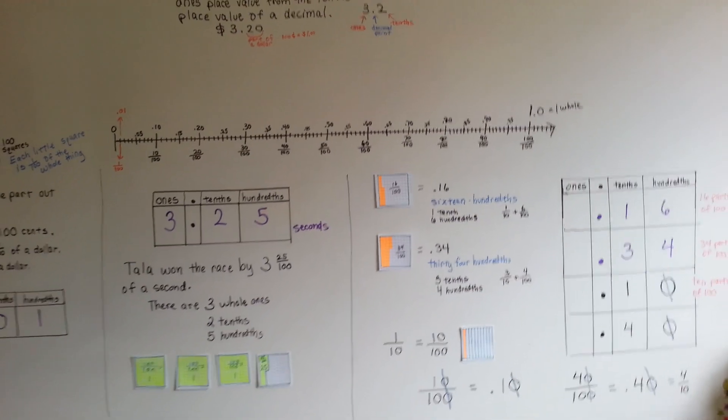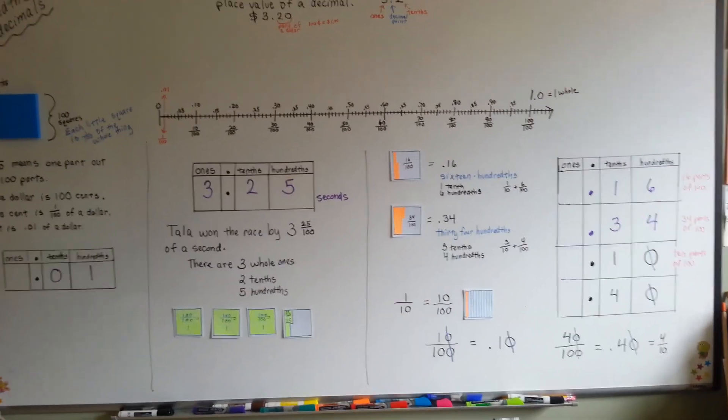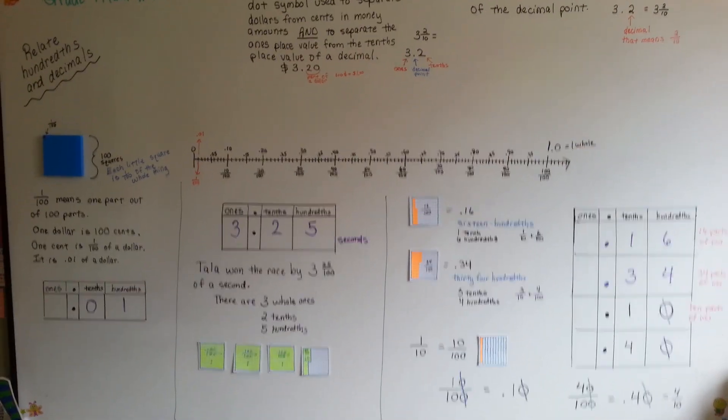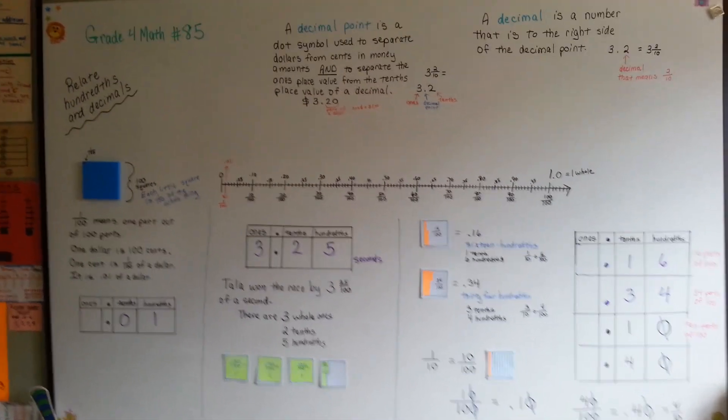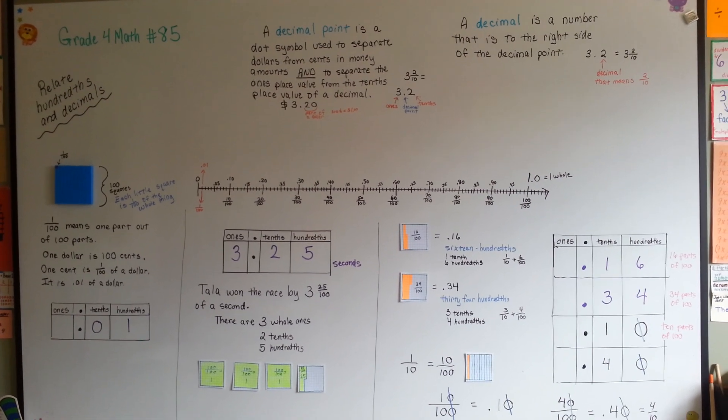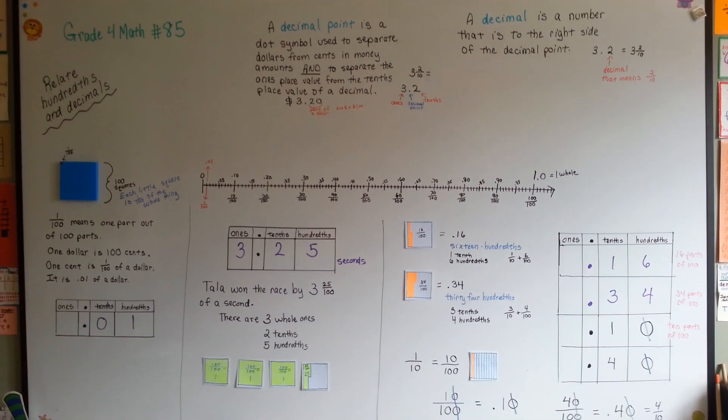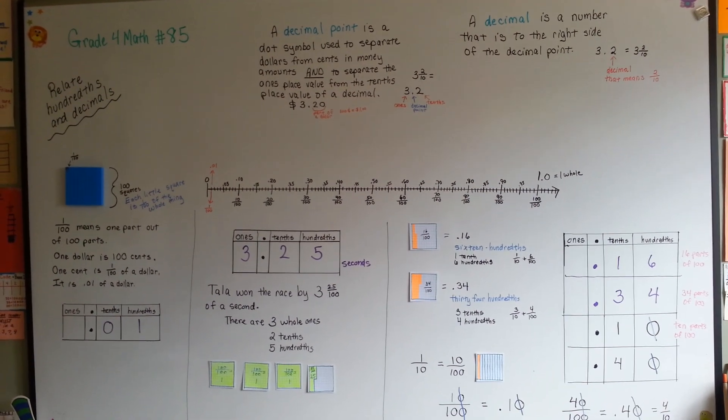So those are hundredths. It's the second place value over from the decimal point. And we're going to continue talking about decimals. Think money. If you think money, it helps you figure decimals out because a dollar is a hundred cents. I'll see you next video. Bye!